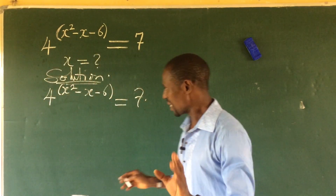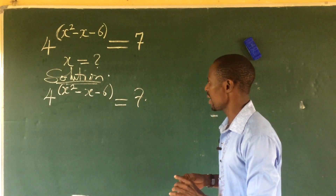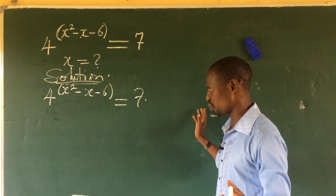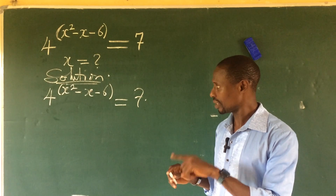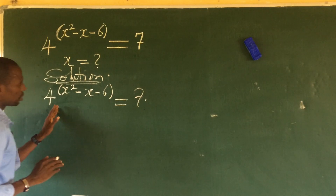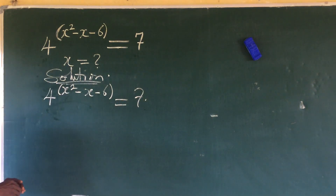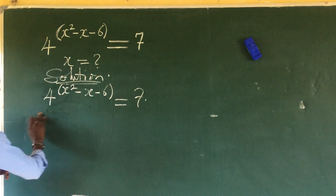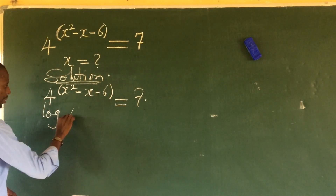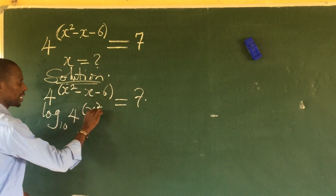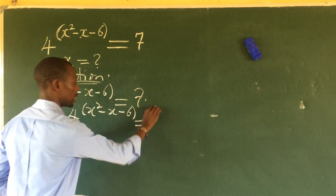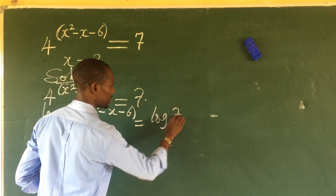The first thing we're going to do is take log base 10 of both sides of the equation. We could also take log base 7 or base 4, but let's go gradually. Taking log base 10 of both sides gives us: log₁₀(4^(x² − x − 6)) = log₁₀(7).